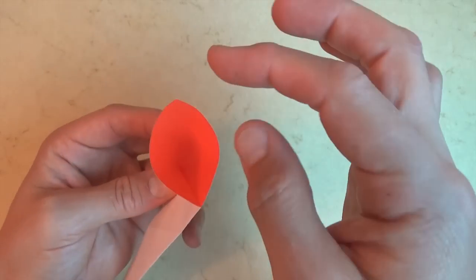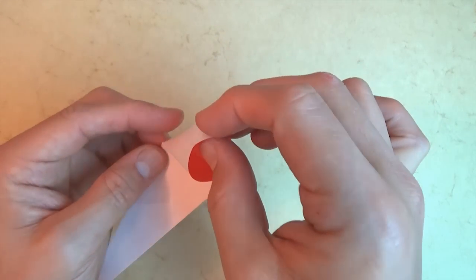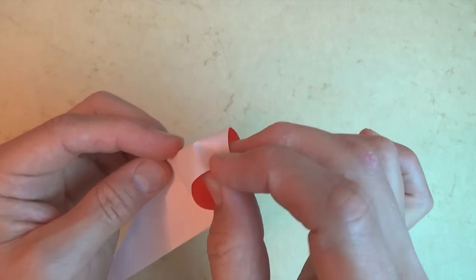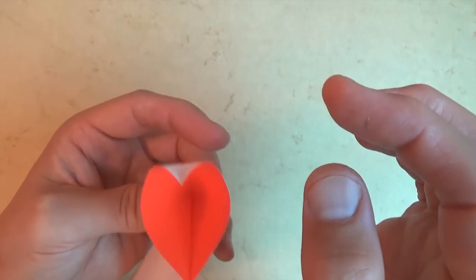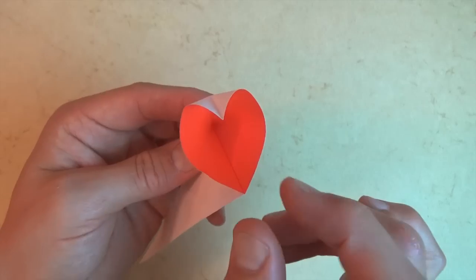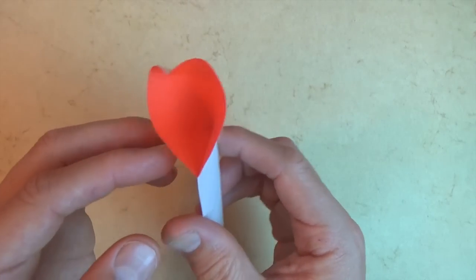And now we just need to make the little crevice in the heart. So just take this corner here and just squeeze it down. And now you have a heart. And you can shape it to taste. I think a wide heart is nice. So here we have the heart on a stick.